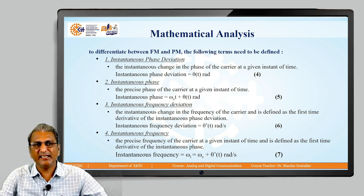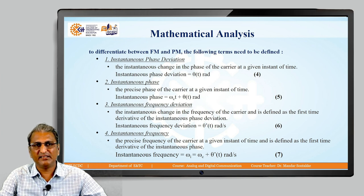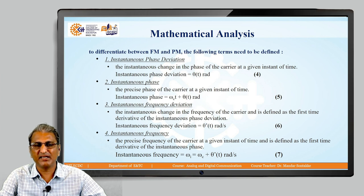Next is instantaneous frequency deviation — the instantaneous change in the frequency of the carrier, defined as the first time derivative of the instantaneous phase deviation. It is the rate of change of theta(t), denoted as theta'(t), and is measured in radian per second. This is equation number 6. A single dash means first order; if there are two dashes, it is the second order rate of change.